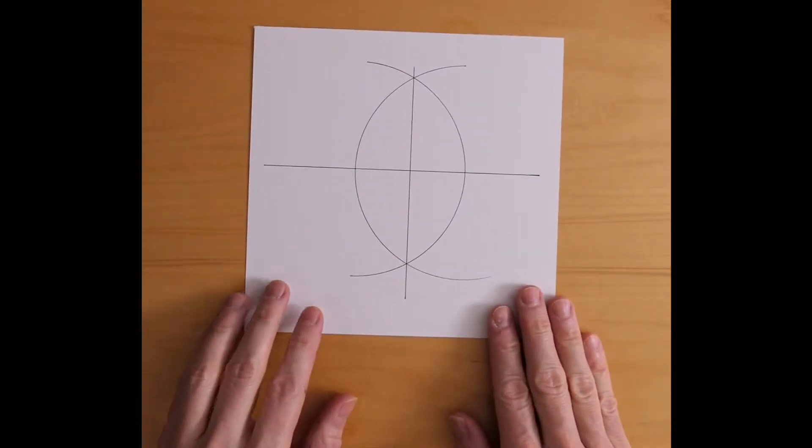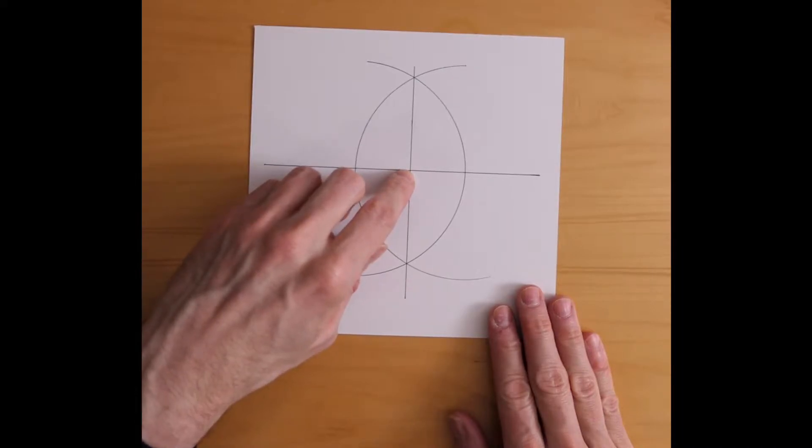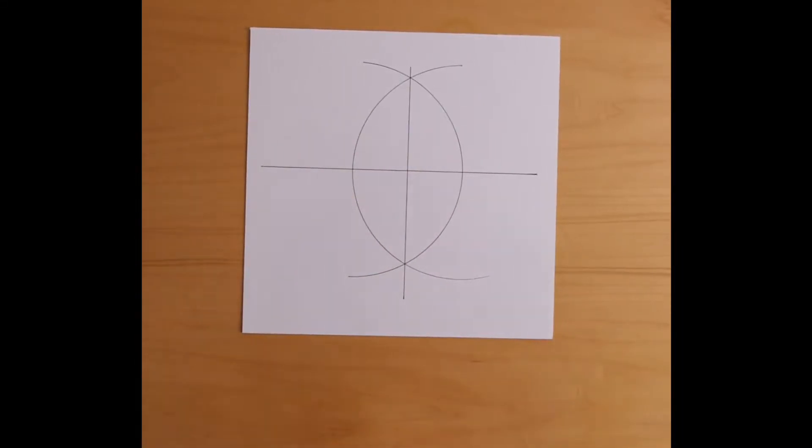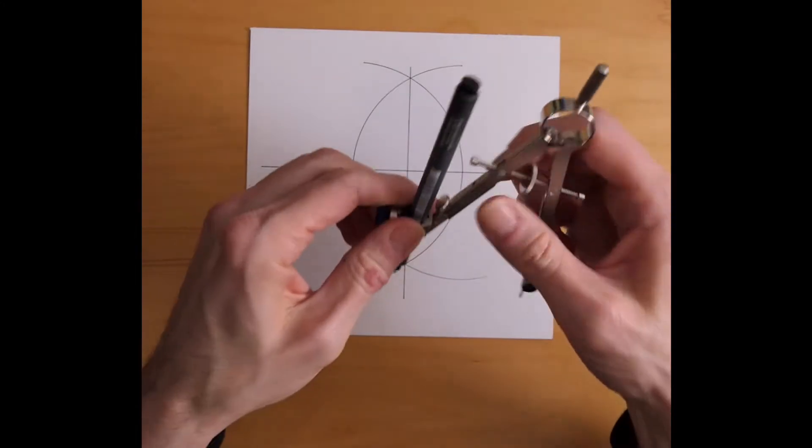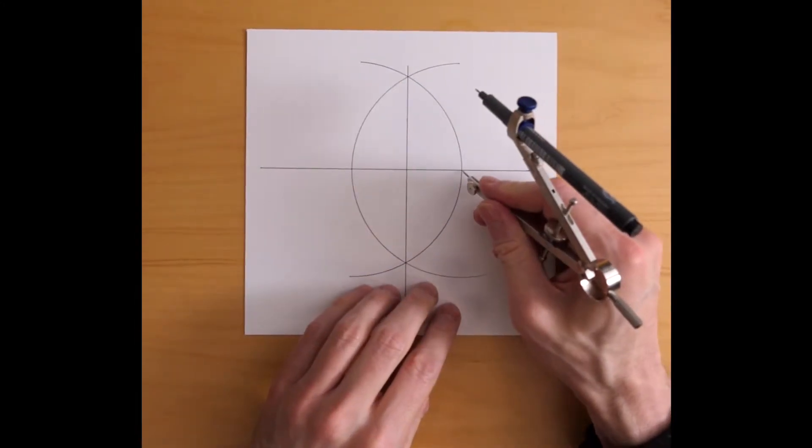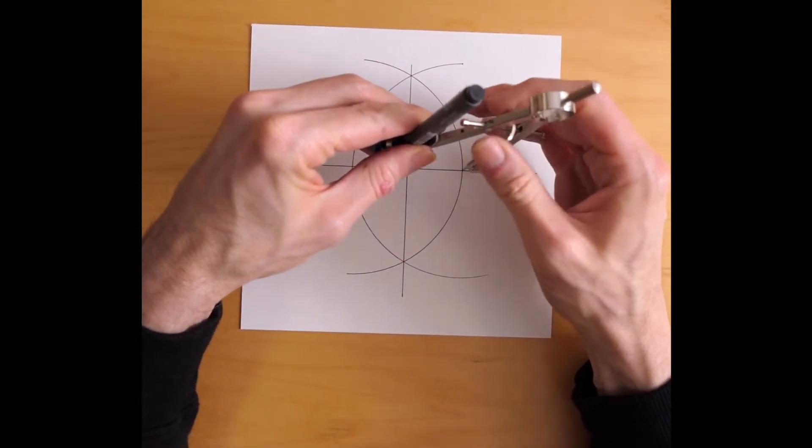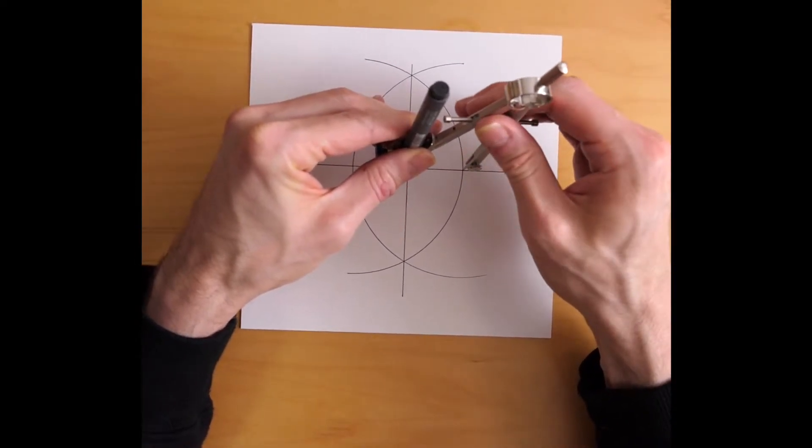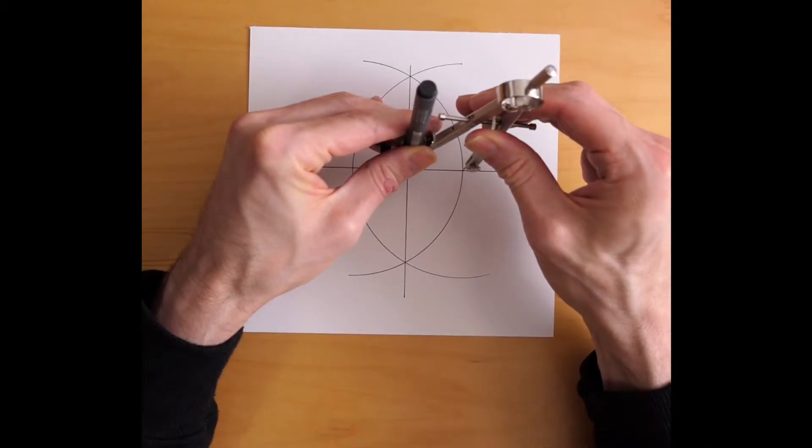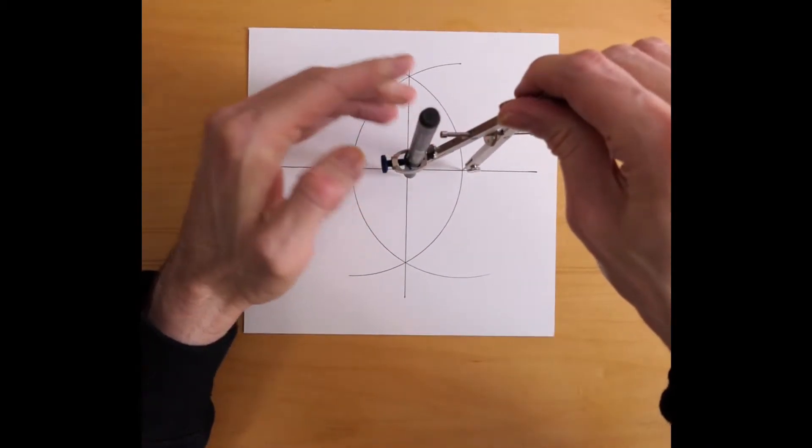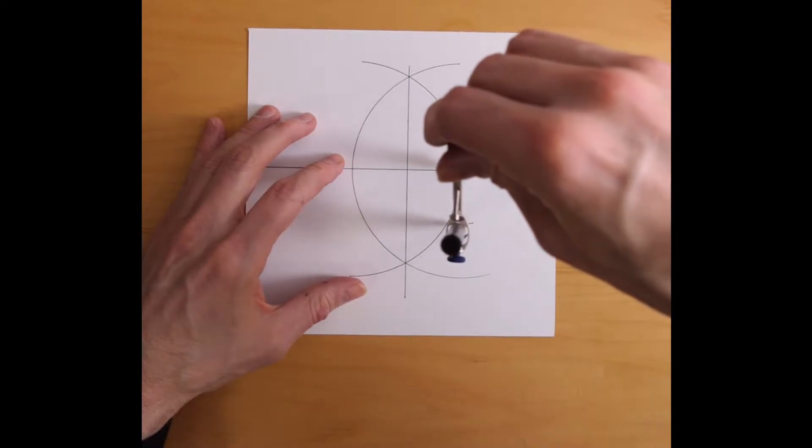Now, that intersection gives me a new point here at the center and I can use that to define a couple more circles that I'm going to care about. I'm going to place the compass point here at this intersection and narrow my compass until the pen just touches the center point. And now I can draw two new circles. One at this point.